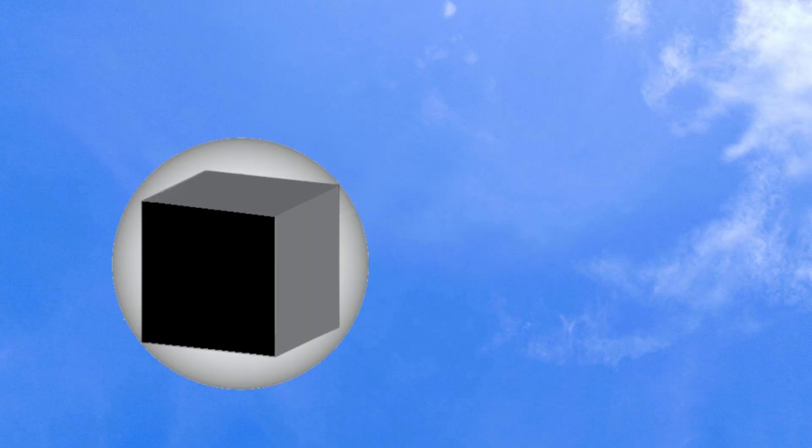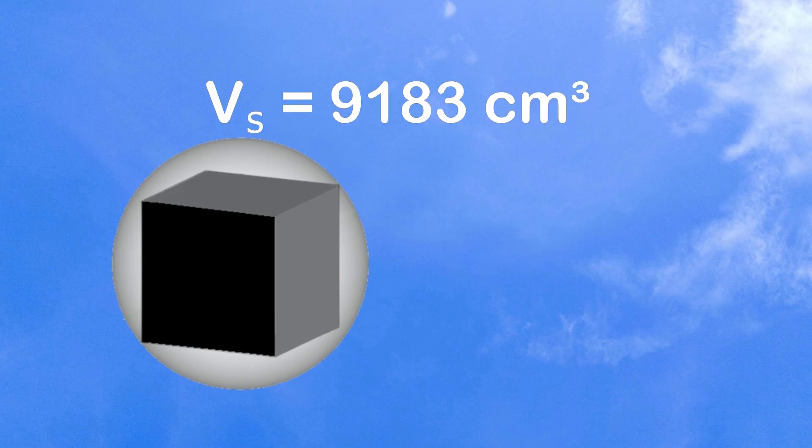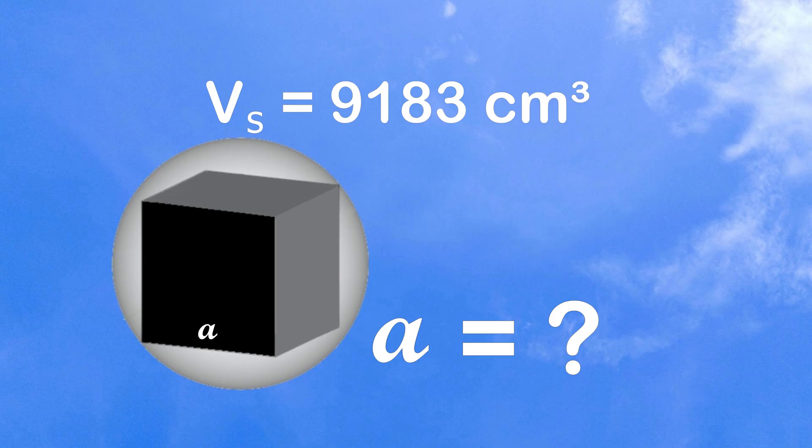A dark cube is inscribed in a transparent sphere. The sphere has a volume of 9,183 cubic centimeters. What is the length of the sides of the dark cube? If you answer correctly with a comment, I will credit you below.